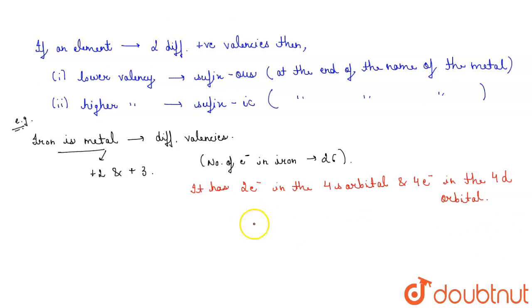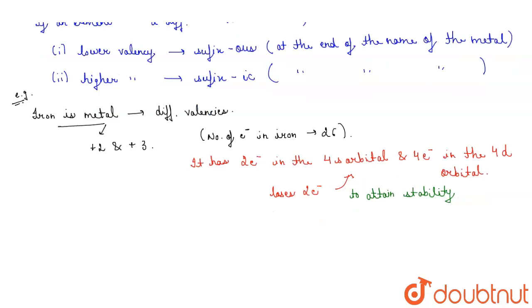It loses two electrons from the 4s orbital to attain stability, making its valency as +2.